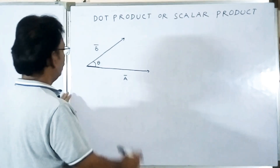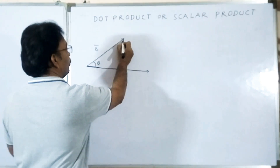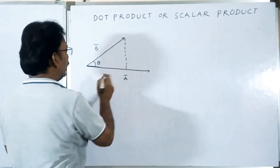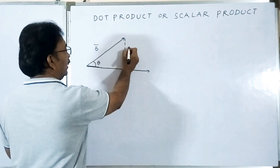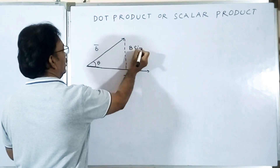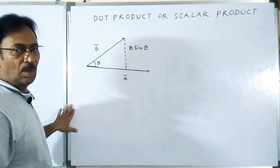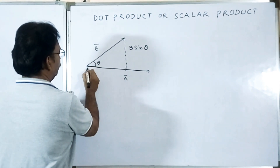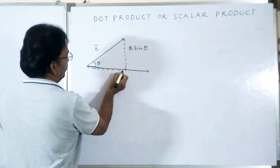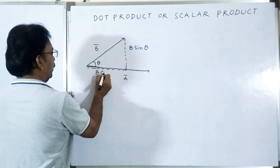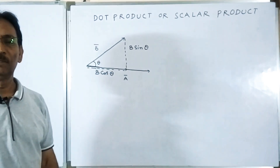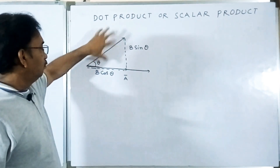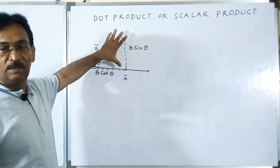I am dropping a normal from vector B and resolving it into components. Vector B is resolved into two components: along the x-axis it is B cosθ, and along the y-axis it is B sinθ.